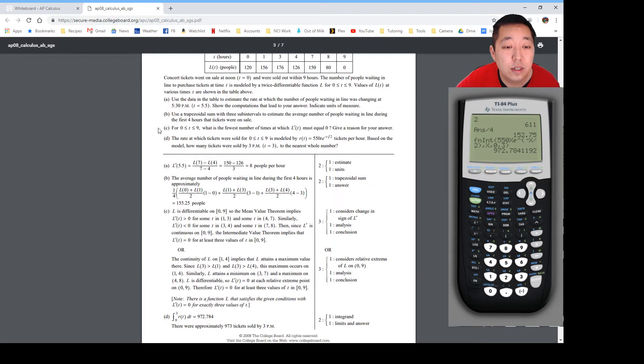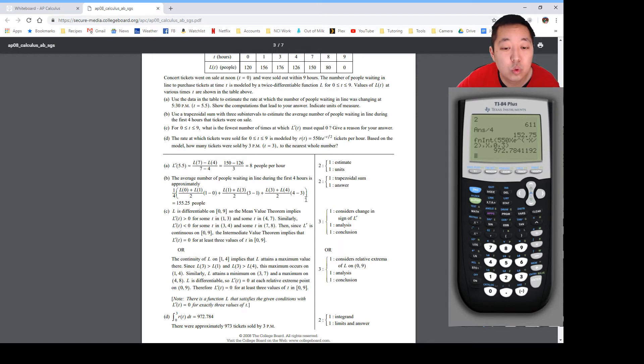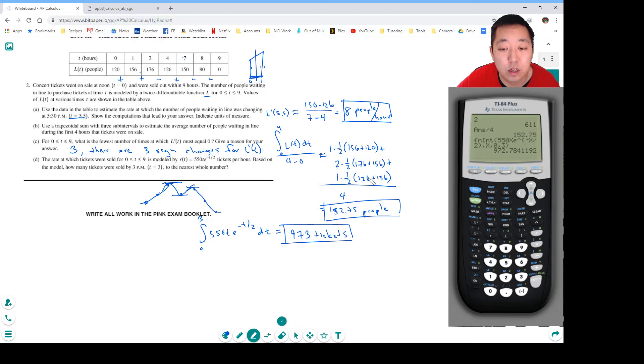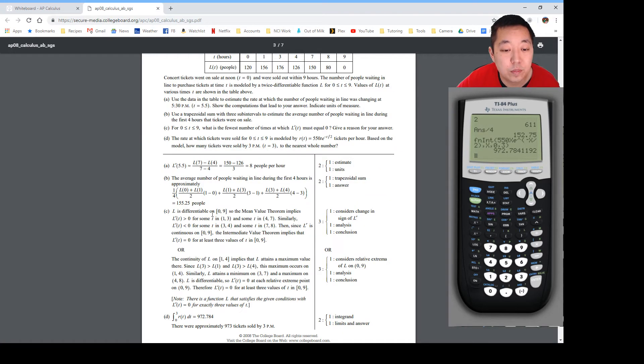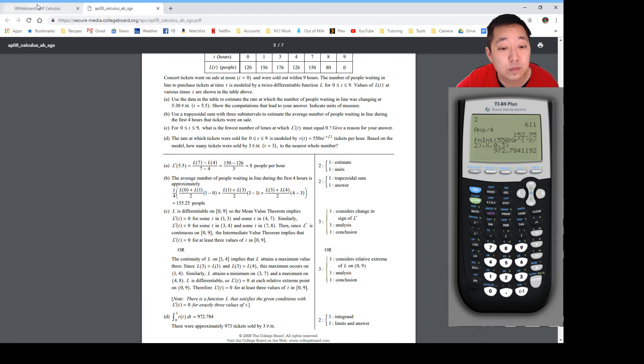Let's check our answers here. 8 people per hour for A - good. About 155.25 people for B. I must have entered this in the calculator wrong. Got this one slightly wrong. I probably typed something in wrong. At least three values - continuity, L is at a maximum value there. You could do continuity or mean value theorem. I did mean value theorem, even though I didn't explicitly say it. Because I said L prime was continuous, and because L prime is continuous, if it changes signs then it has to go through 0. That's mean value theorem, or intermediate value theorem. 973 tickets - yep. Okay, so I think we did pretty good on that.